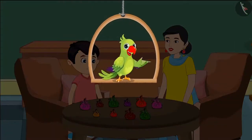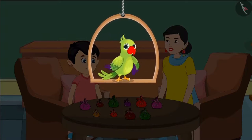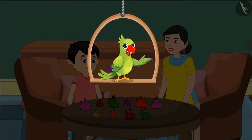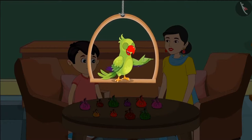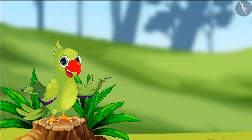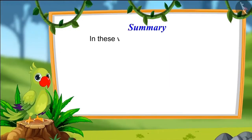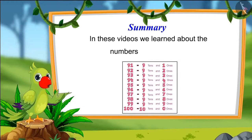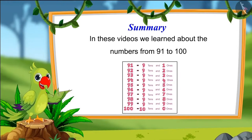Children, did you see what mistake Shotu made? You should not make such a mistake either. We should keep this in mind while making groups of ten and counting — each group must be made up of ten things. Groups made up of a different number of things are not counted as tens. So children, that was all for today. In these videos we learned about numbers from 91 to 100. I hope you have understood this topic properly. Bye friends!